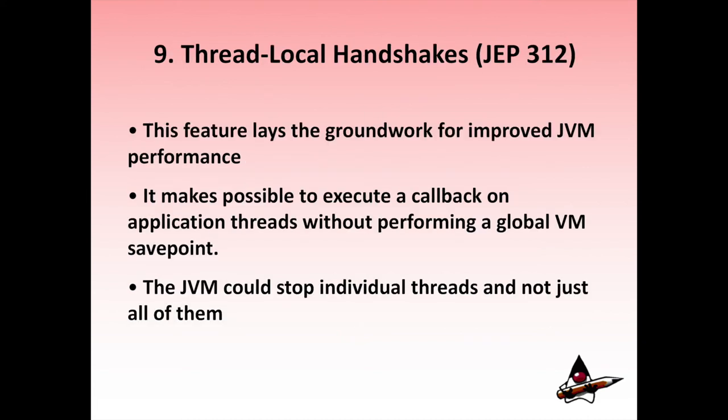Feature 9: Thread Local Handshakes, in JEP 312. This Java 10 feature lays the groundwork for improved VM performance by making it possible to execute a callback on application threads without performing a global VM safepoint. This means the JVM can stop individual threads and not just all of them. Several small improvements are part of JEP 312 — safepoints and memory barriers have been removed from the JVM, and biased locking is improved by only stopping individual threads for revoking biases.